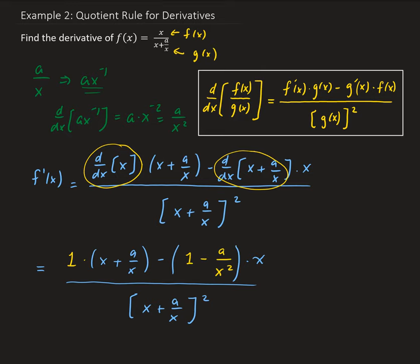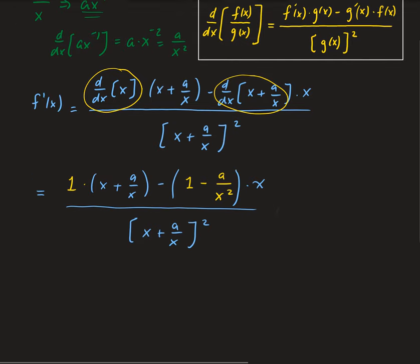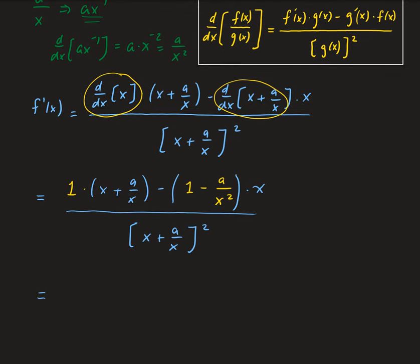We have our derivative now and can simplify. We're going to get x plus a over x, then distribute the x: we have minus x times a over x, because we have x over x squared that leaves us with 1 over x and then we have a in the top, all divided by x plus a over x squared.